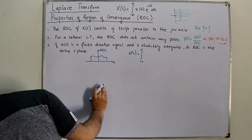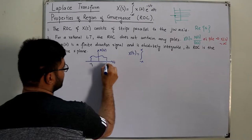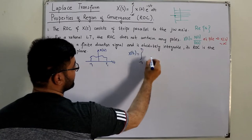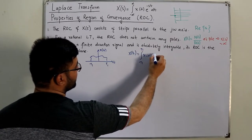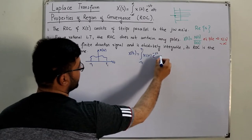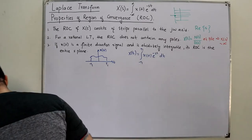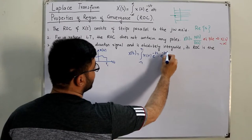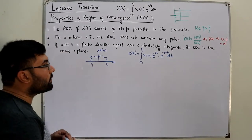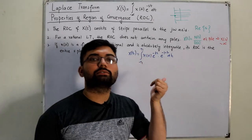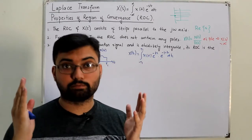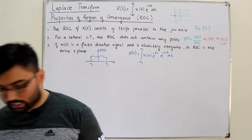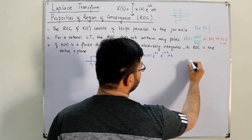For a finite duration signal with limits from -t₁ to +t₁, we write x(s) as the integral of x(t) · e^(-st) dt, or equivalently e^(-σt) · e^(-jωt) dt. The question is: for what values of σ would this Laplace transform converge?